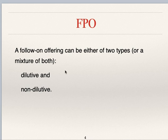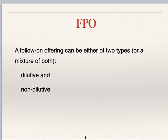FPO, follow-on offering, is of two types: dilutive and non-dilutive. In case of dilutive offer, there is dilution of earning per share because total number of shares will increase. For example, if net profit is Rs. 1 lakh and existing shares are 1 lakh, EPS is Re. 1. But if 1 lakh more shares are offered, total shares become 2 lakh and EPS will decrease — there is dilution.